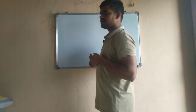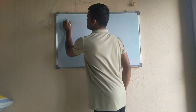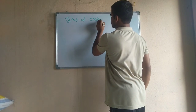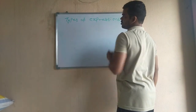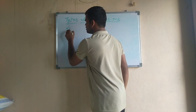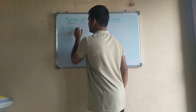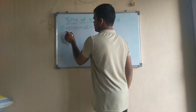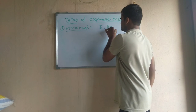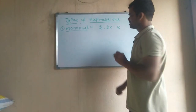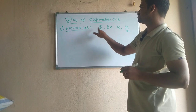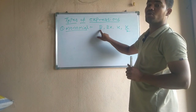According to terms, we have some types of expressions. The first type is monomial. A monomial is nothing but an expression that has only one term — a single term in the expression is called a monomial expression.